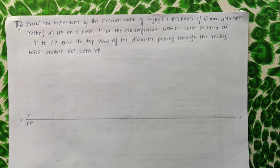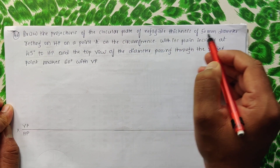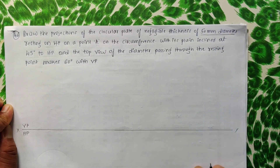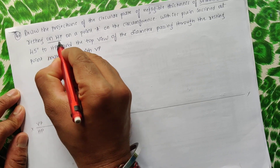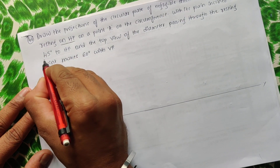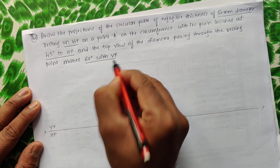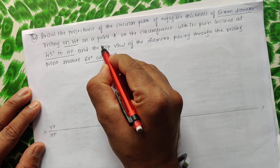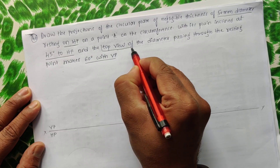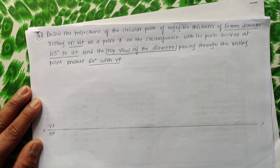Here is a problem on circles. Draw the projections of a circular plate of negligible thickness and 50mm diameter, resting on HP on a point A on the circumference, with its plane inclined at 45 degrees to HP. The top view of the diameter passing through the resting point makes 60 degrees with VP. This last point is important and we'll address it while solving.